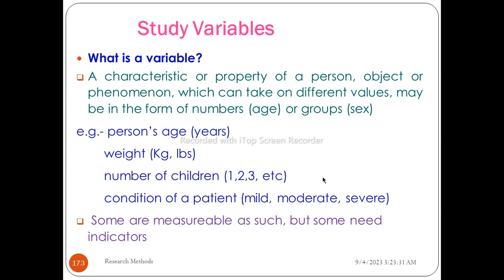Dependent variables and independent variables. A variable is a characteristic or property of a person, object, or phenomenon which can take different values, maybe in the form of a number. If you look at the variable, the variable can be different — a person or object may have a different value.